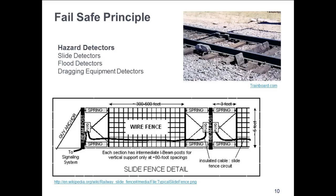Slide detectors are fences located in mountainous territory about 20 feet or so from the track. If a boulder rolls down the hill and is detected, the signal changes to red to prevent trains from entering the slide area. A dragging equipment detector is located between the rails to detect anything dragging or broken from the train itself.